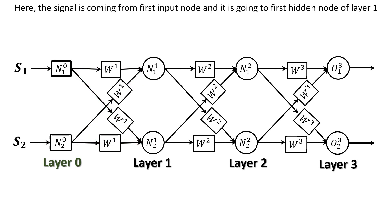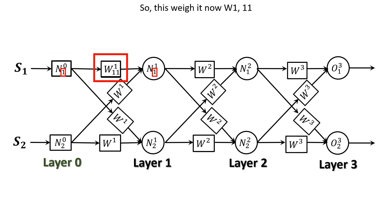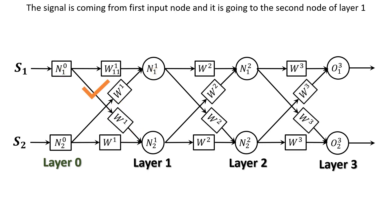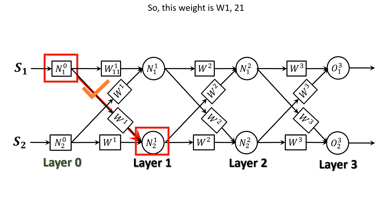Let's take the direction of the flow of the signal as another weight indicator. Here the signal is coming from first input node and it is going to the first hidden node of layer 1. We can take these ones and put it as the subscript of the weight. So, the weight is now W111. If you are confused, don't worry. Let's repeat the process for this weight. The signal is coming from first input node and it is going to the second node of the layer 1. So, this weight is W121.